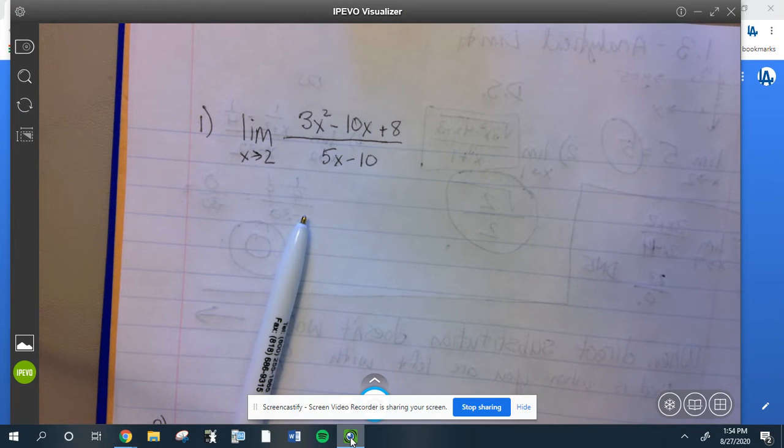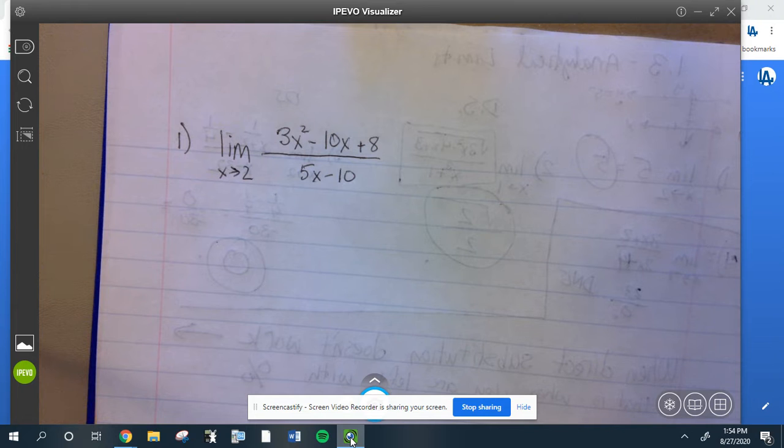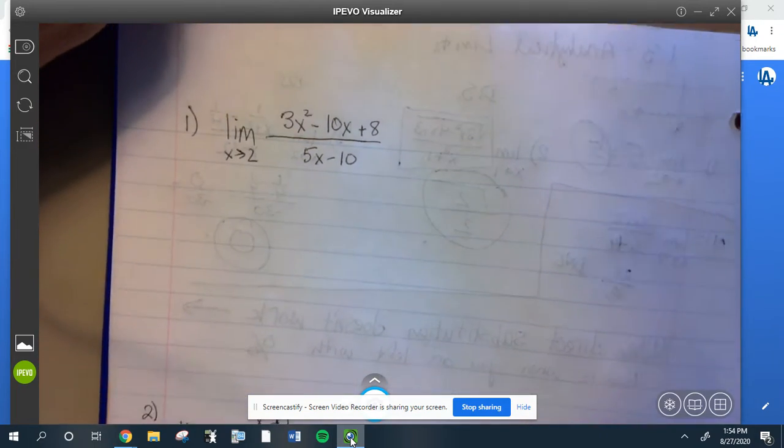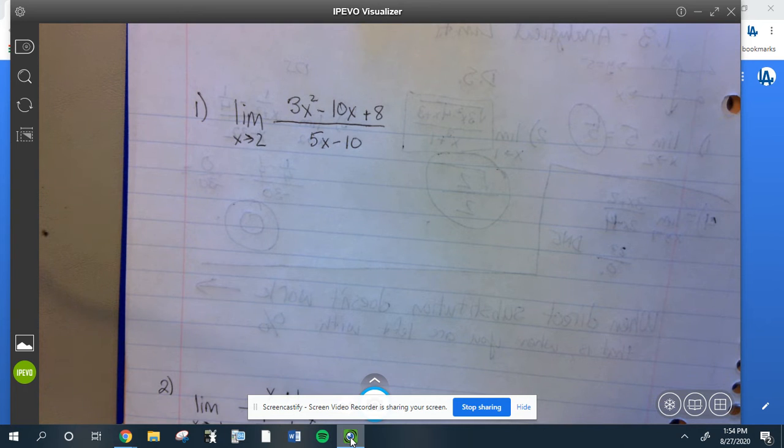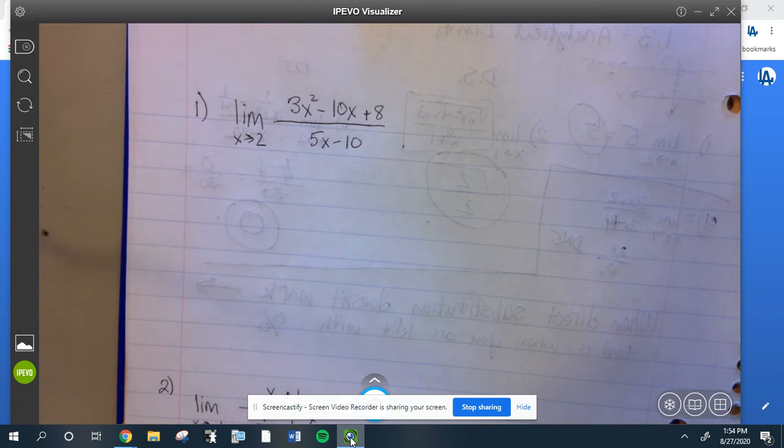All right, so as I've said before, the only time you really have to do any work with a limit is when you get zero over zero, at least for the problems we're looking at. Later on in calculus you'll see that it's not that easy, but the ones we're looking at right now it is. So here's an example right here of a function.